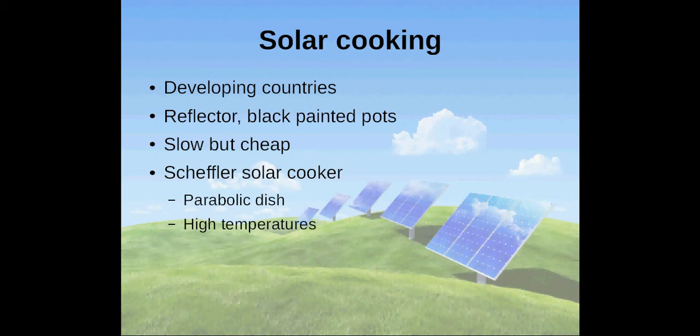Solar cooking has been used for years in developing countries. A solar cooker is composed of a wooden box lined with insulation and covered with a reflector. The reflector concentrates the heat of the sun to the pots which are painted black to maximize heat absorption.